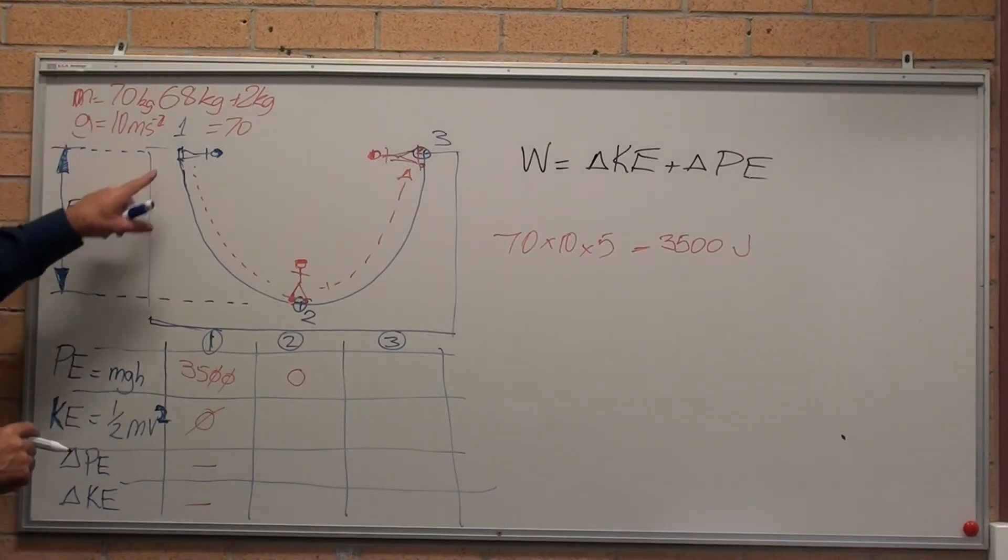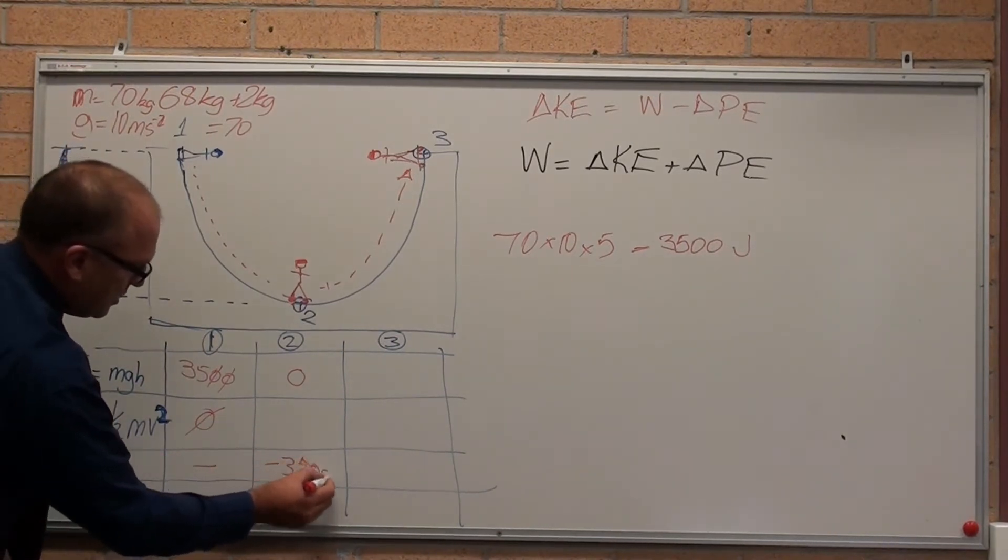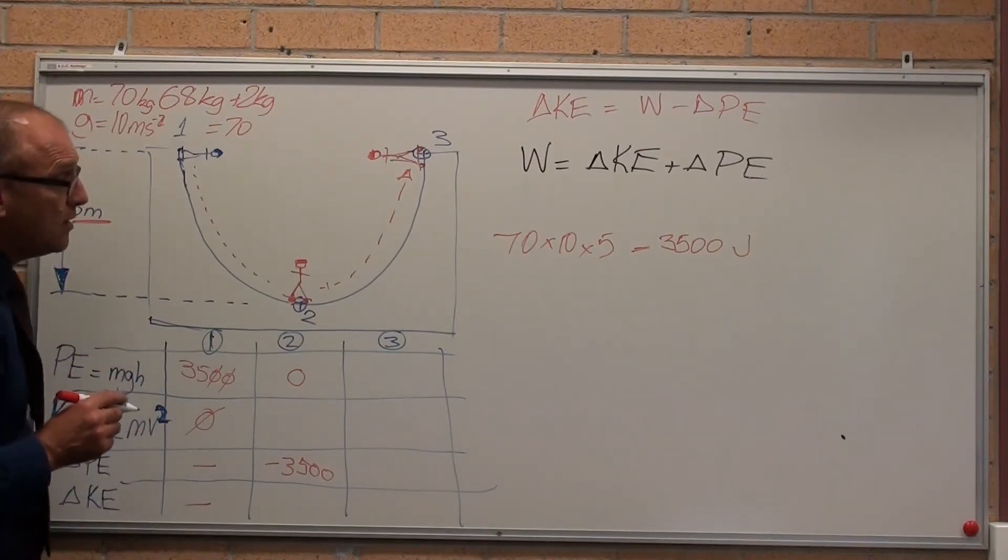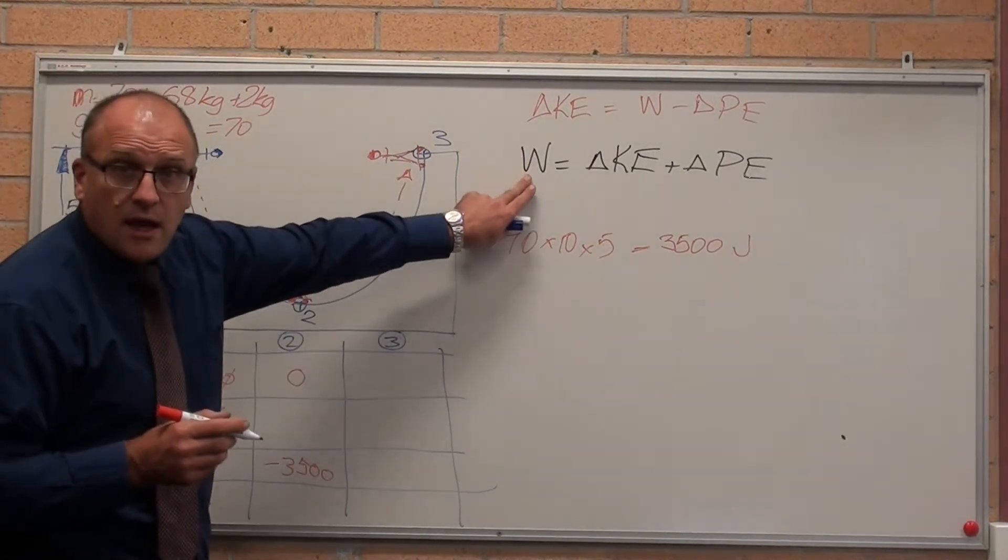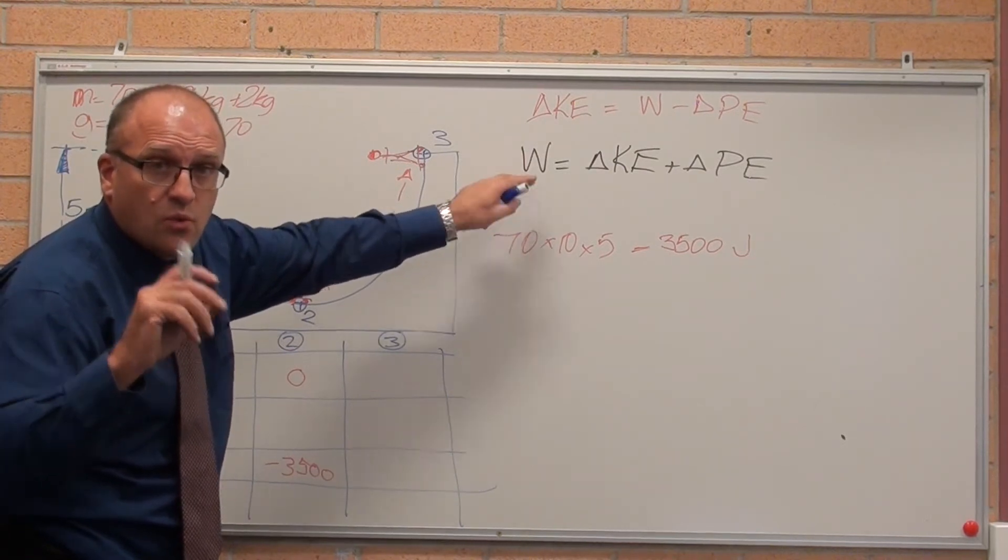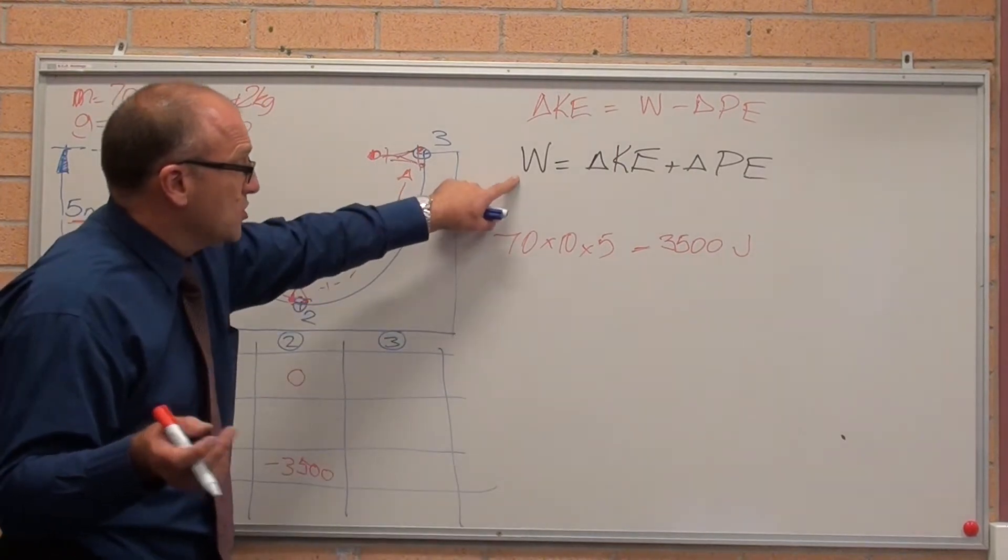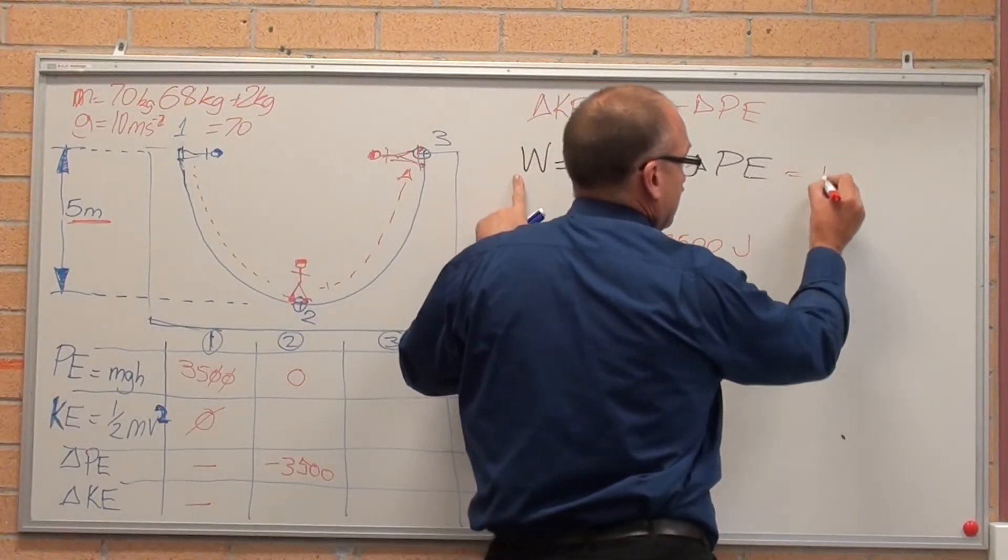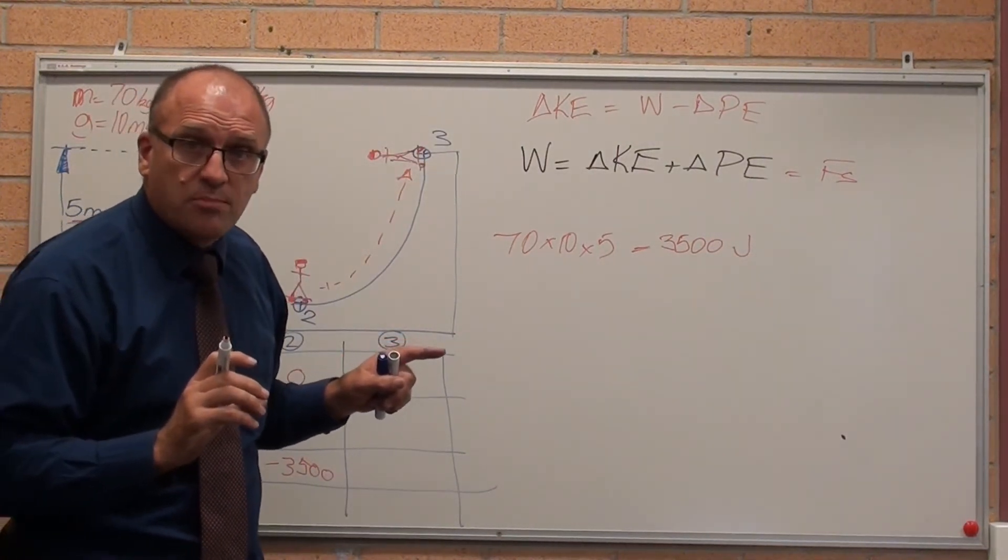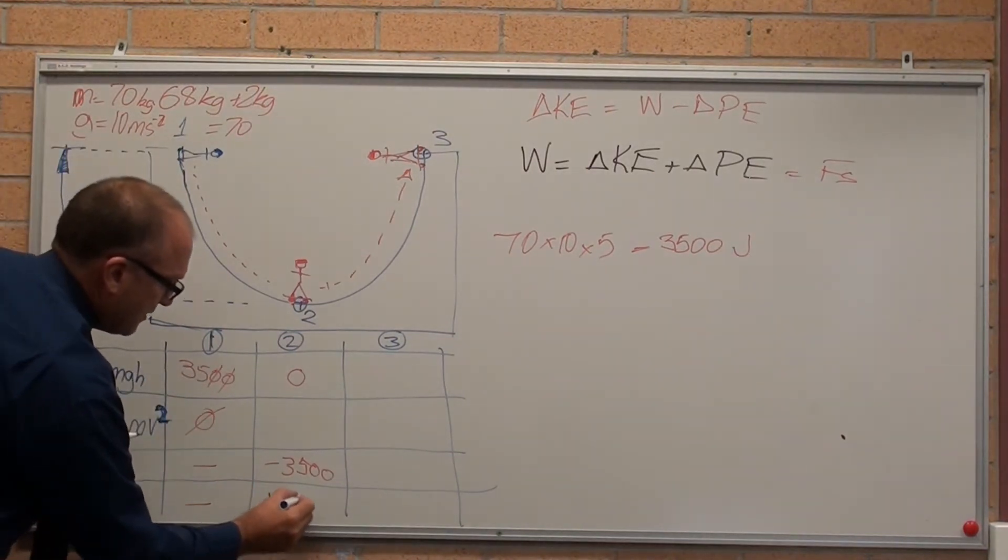His kinetic energy, however, change in potential energy, it's minus 3,500, because he's lost 3,500 joules. There is no work done, because there's no force. There's no resistance, so there is zero work. We're just converting energy from one form to another form. Work is force times distance. There is no force against him. There is no work being done.